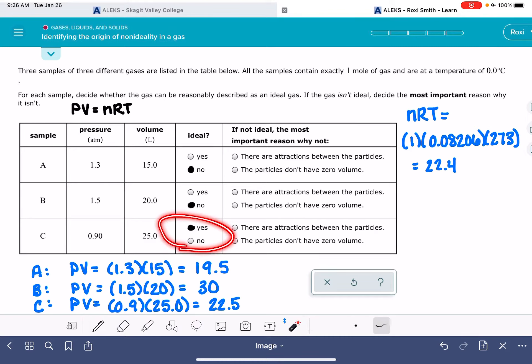For gas C, because it's ideal, we don't need to answer this question over here. But for gas A and B, because they are not ideal gases, we have to choose why, what is the most important non-ideality for gas A and gas B?